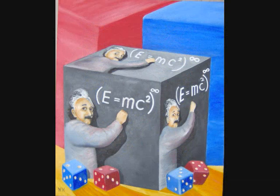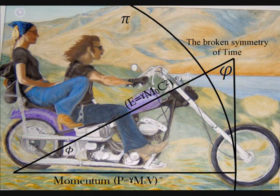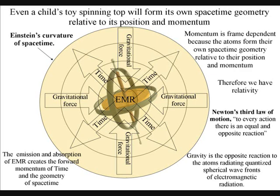This theory fits in with Einstein's theories on relativity, because the individual atoms create their own space-time geometry relative to their position and momentum, therefore there is no universal time. Because of this momentum is itself frame-dependent, and the observer, as a group of atoms, is the only true reference frame. Even a child's toy spinning top will form its own space-time geometry, relative to its position and momentum.